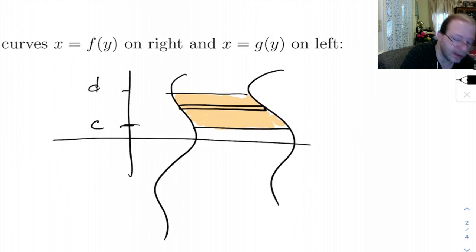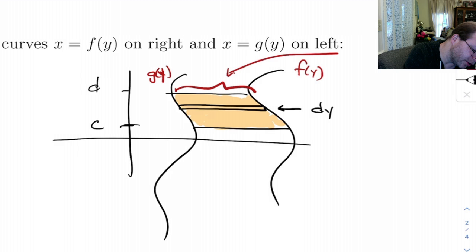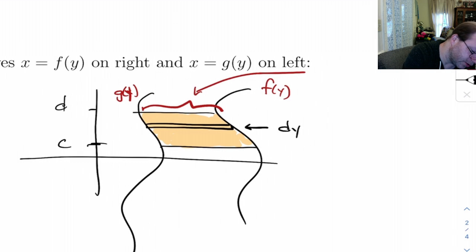So when we do that, notice the thickness here is a tiny change in y, and the length of this curve from here to here, that's a change in x. Notice we've got x is g of y on the left and f of y on the right. So this length here is going to be f of y minus g of y.